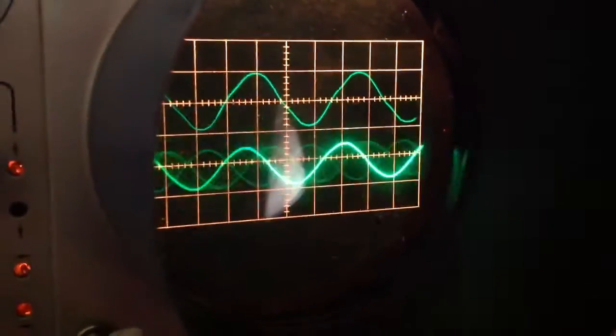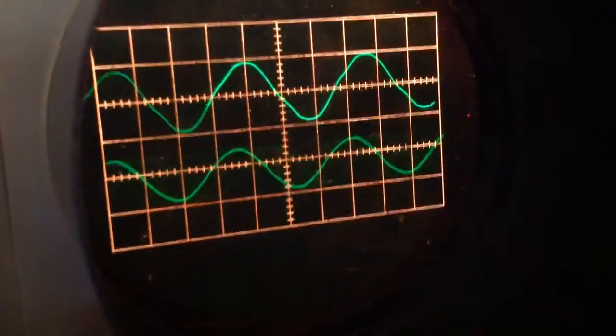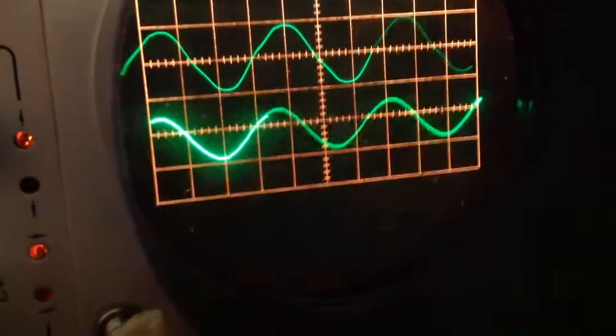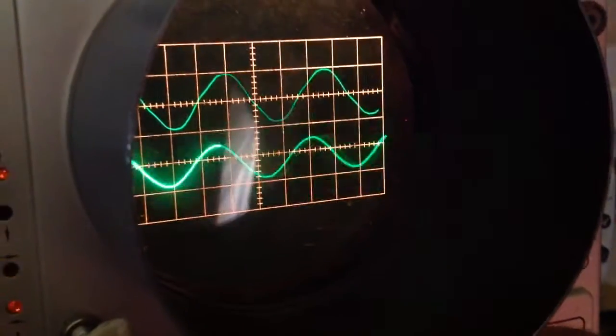When a 1200W hairdryer is applied, the bottom trace on the scope here is the inverter, the top one is the mains. I'm just having some issues getting it calibrated.